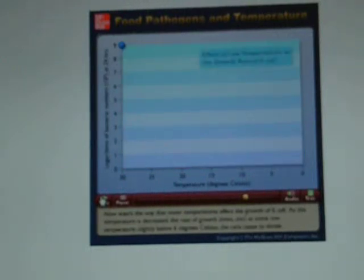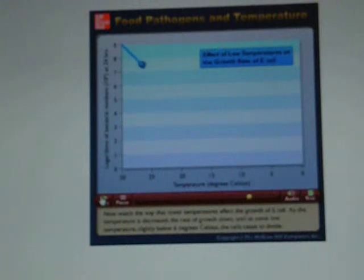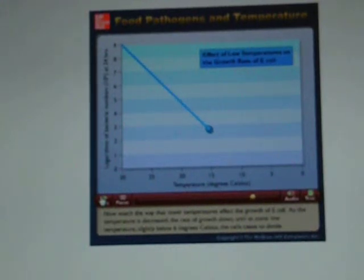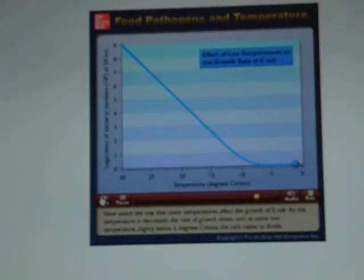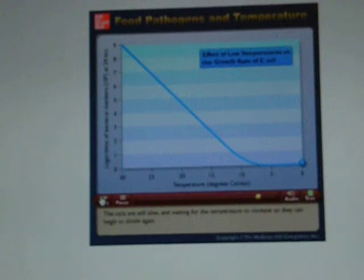Now watch the way that lower temperatures affect the growth of E. coli. As the temperature is decreased, the rate of growth slows until at some low temperature, slightly below 6 degrees Celsius, the cells cease to divide. The cells are still alive and waiting for the temperature to increase so they can begin to divide again.